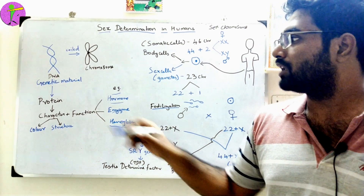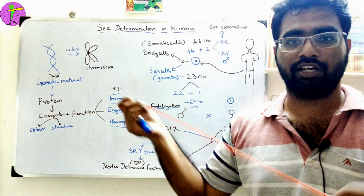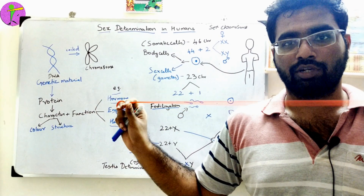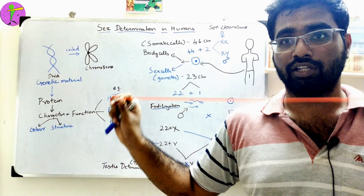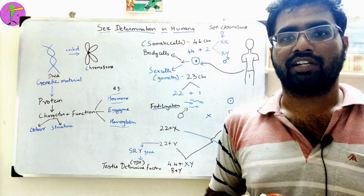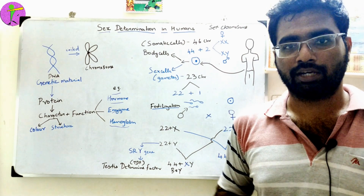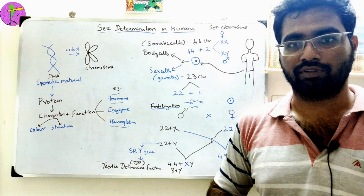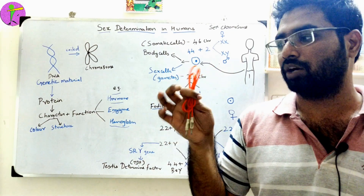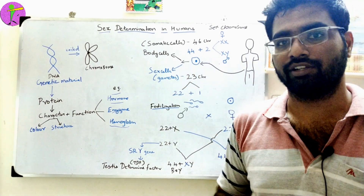DNA is very long in length, and the cell must accommodate this length. That is why DNA is compact — it is formed into a chromosome, which is contained within the nucleus.